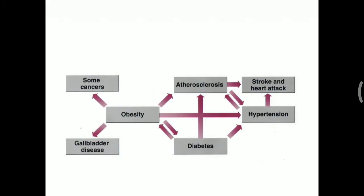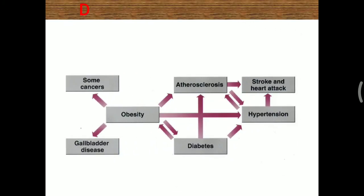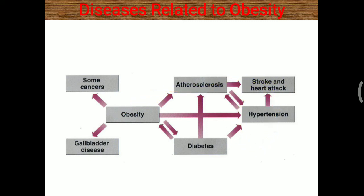Obesity can lead to diabetes and atherosclerosis, which are directly related to stroke, heart attack, and hypertension. It can also lead to some cancers, as well as gallbladder and pancreatic disease.